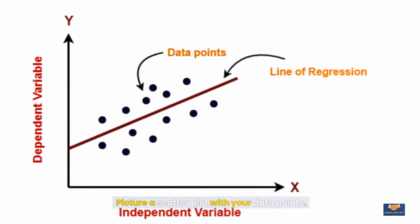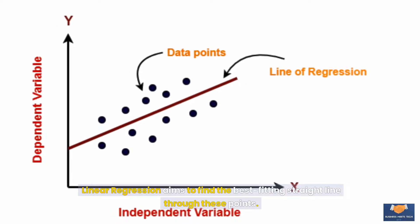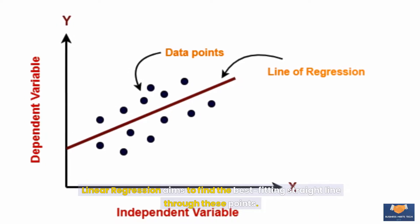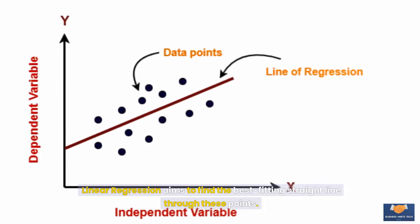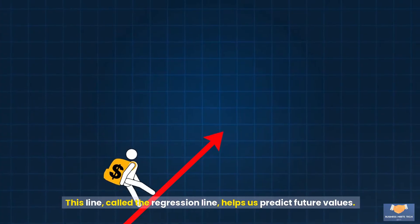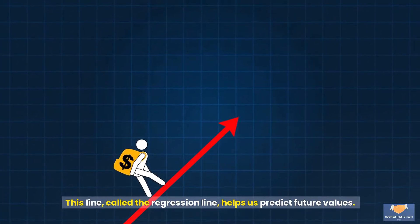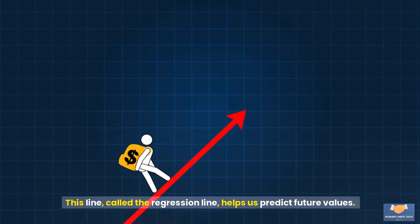Picture a scatter plot with your data points. Linear regression aims to find the best fitting straight line through these points. This line, called the regression line, helps us predict future values.